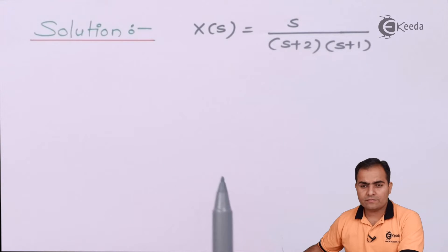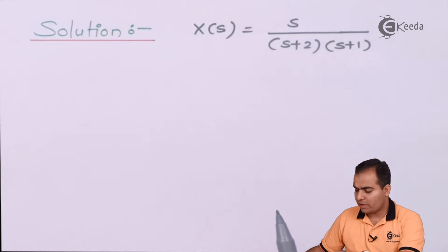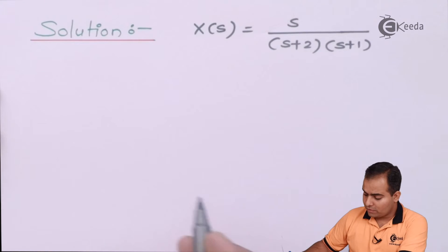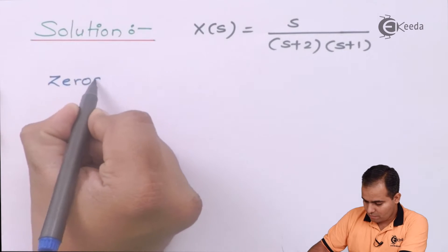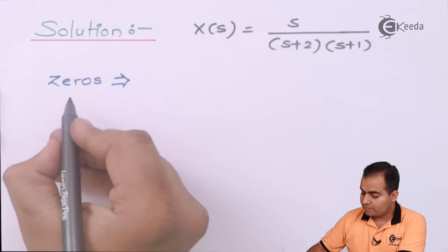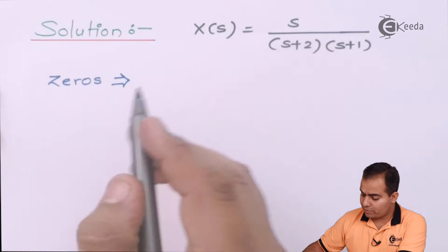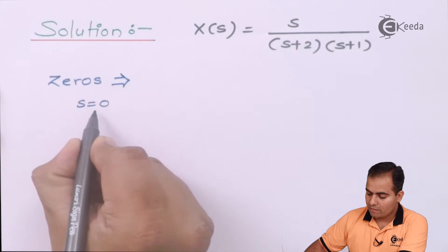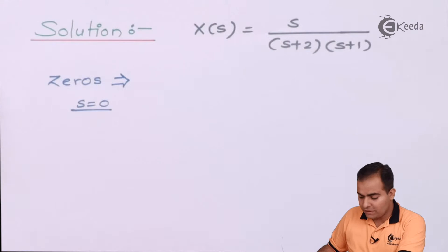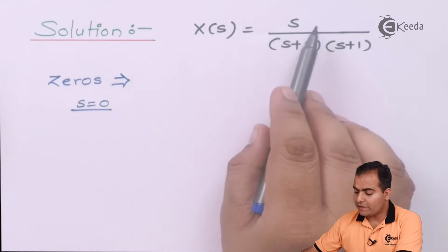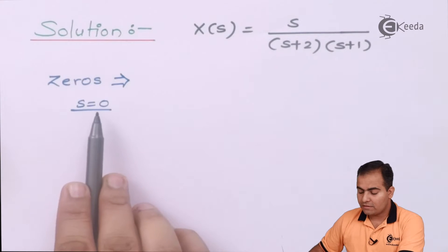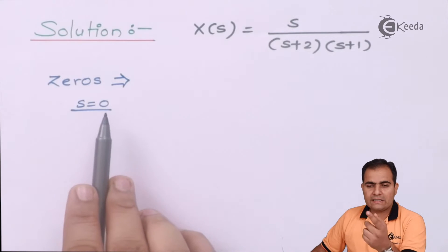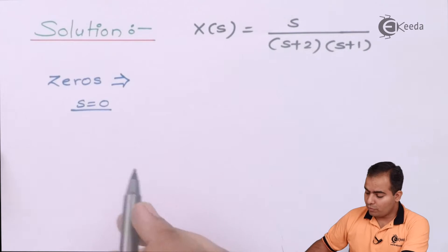In this function, only a single S is in the numerator. So equate S equal to zero. What you get is S = 0. This means there is only one zero, and it is placed at the origin. So in this function we have only one zero, located at the origin.